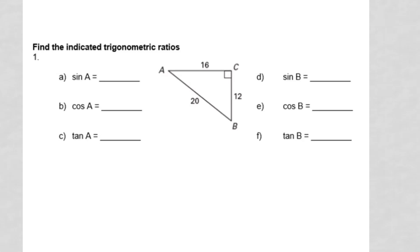This question says find the indicated trigonometric ratios. The first angle we're dealing with is A. So in regards to A, 12 is opposite, 16 is adjacent, and 20 is my hypotenuse. That will never change. 20 will always be the hypotenuse.